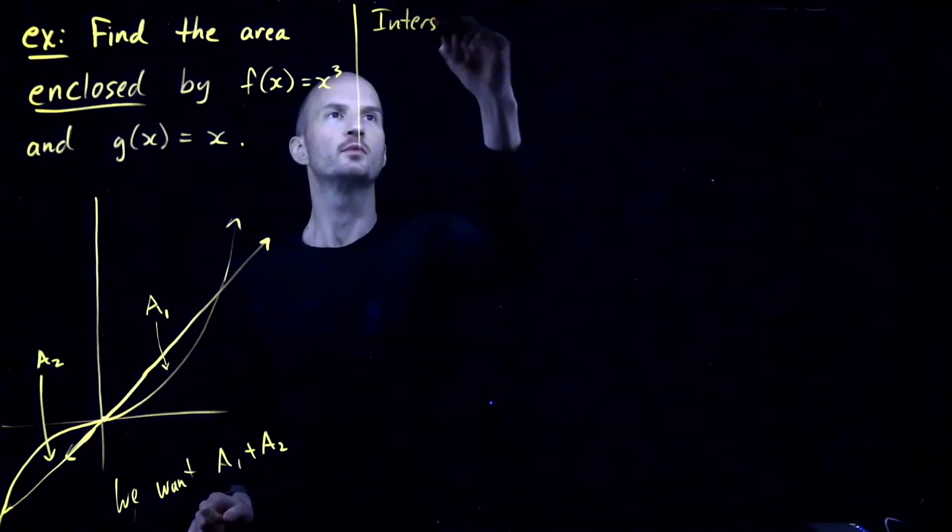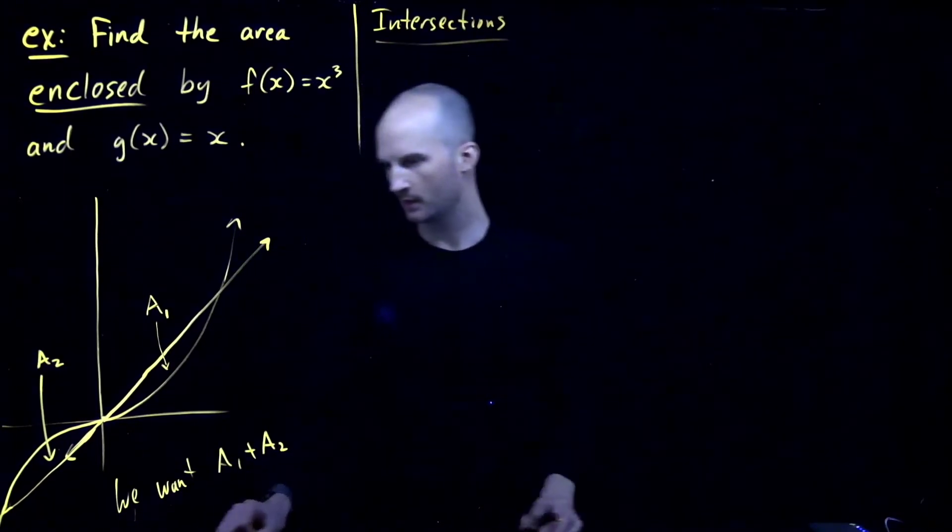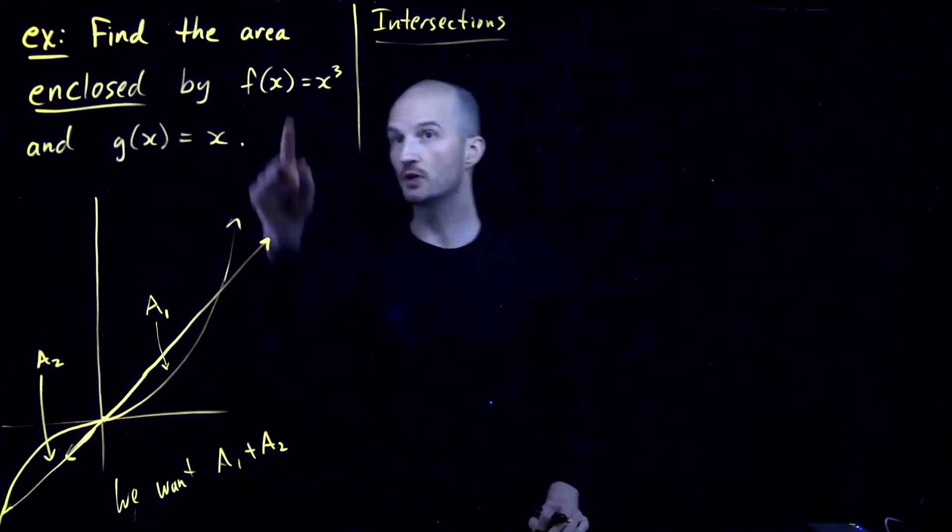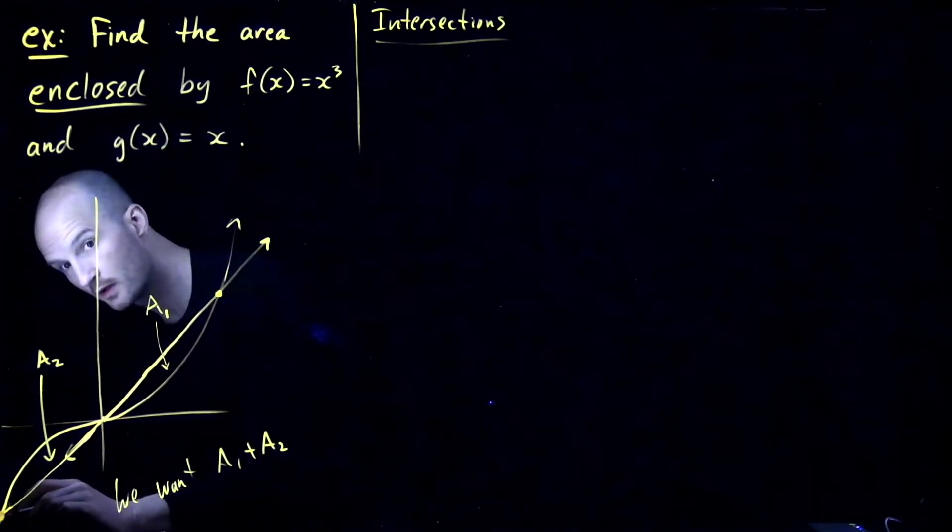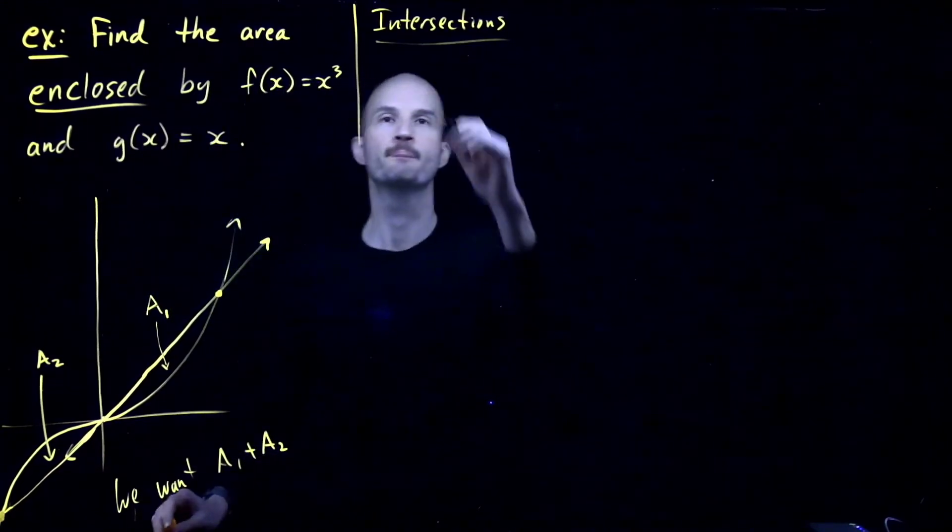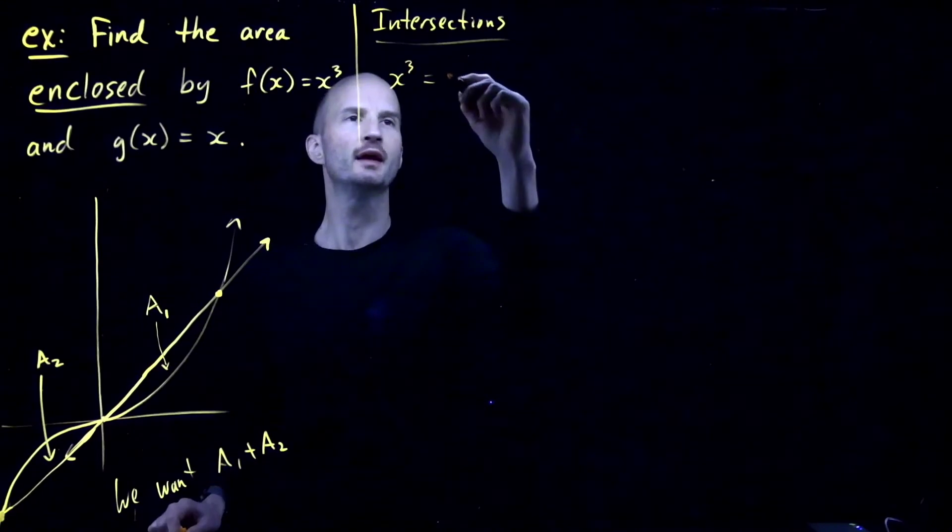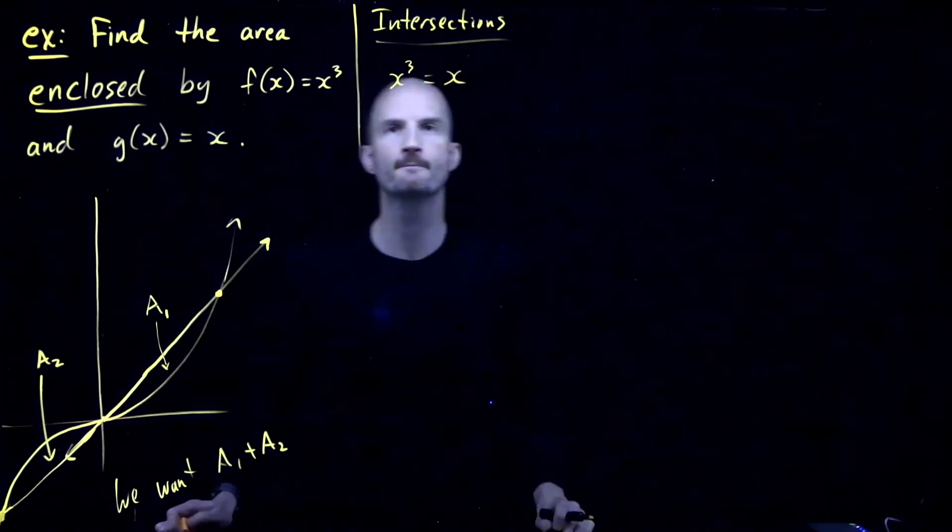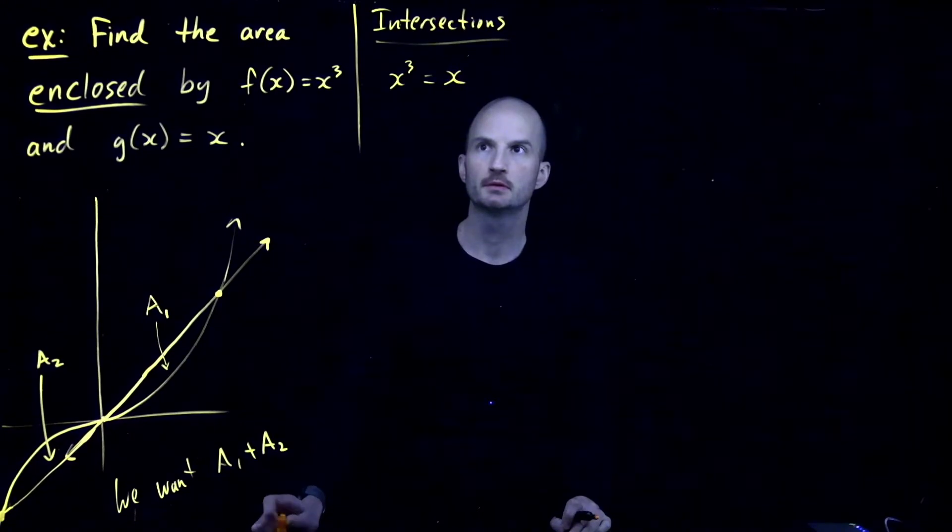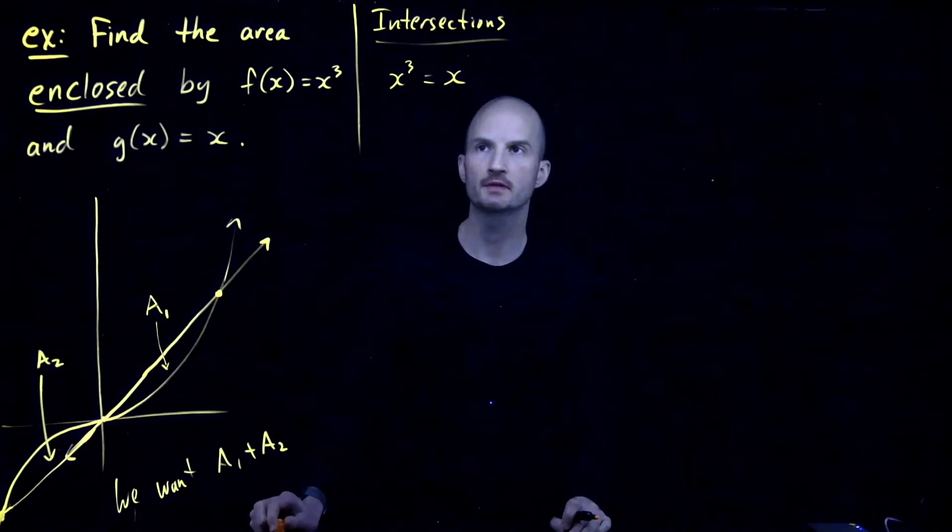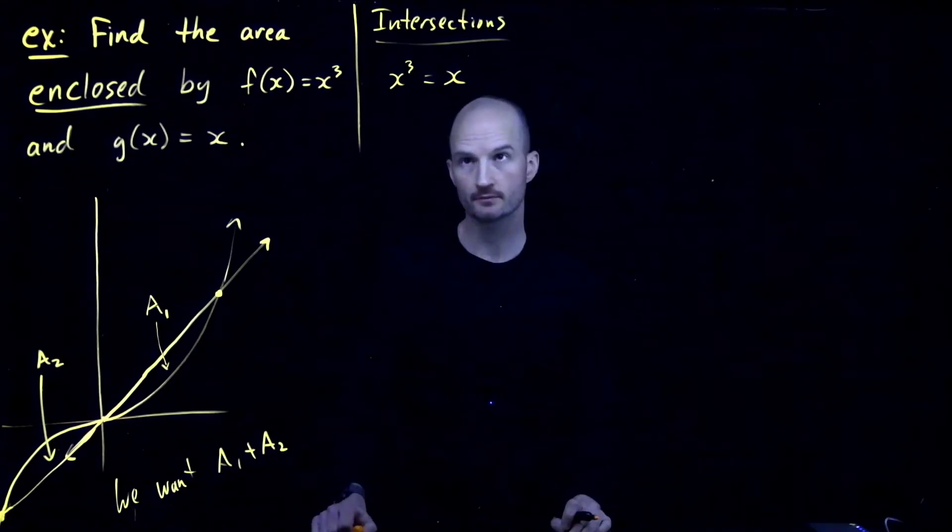Okay. As you may have guessed, we're going to need to find the intersection points. So, what are the intersection points of these two curves? I need to find the coordinates of this point and also this one down here. So, we'll take x cubed and set it equal to x. Now, an important point. You must solve by factoring.